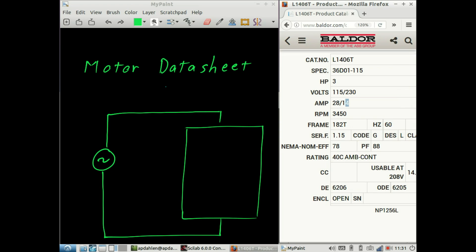Now let's write down some of the specs here. We know that it is a 3 horsepower motor. The efficiency is listed here, so η is equal to 78 percent, and the power factor is listed as 88, so the power factor is equal to 0.88.